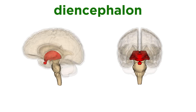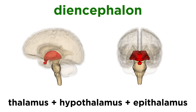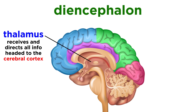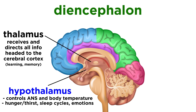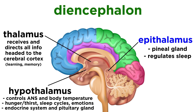Moving on from the cerebral hemispheres, we get to the diencephalon, which sits at the very center of the brain. This consists of the thalamus, hypothalamus, and epithalamus. The thalamus receives and directs all information headed to the cerebral cortex, making it intimately involved with learning and memory. The hypothalamus sits immediately below the thalamus and controls the autonomic nervous system, regulates body temperature, hunger and thirst, sleep cycles, physical response to emotions, and the endocrine system. It also houses the pituitary gland. Lastly, the epithalamus houses the pineal gland and helps regulate sleep.